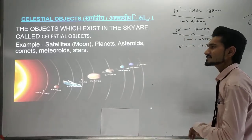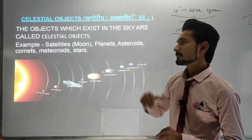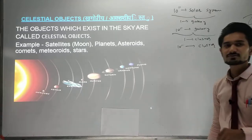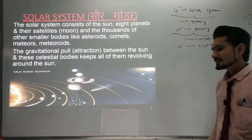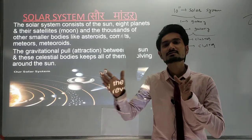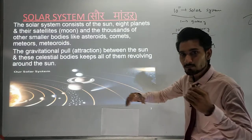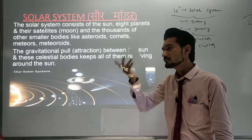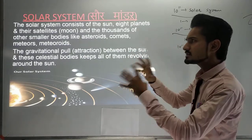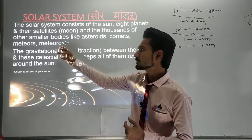We are going to study asteroids, comets, meteorites, and stars — all these things we will study in this universe chapter. Let us begin the first topic: what is the solar system? In this topic we will learn how to memorize each individual planet sequentially. The solar system means the sun, eight planets and their satellites, and thousands of other smaller bodies.